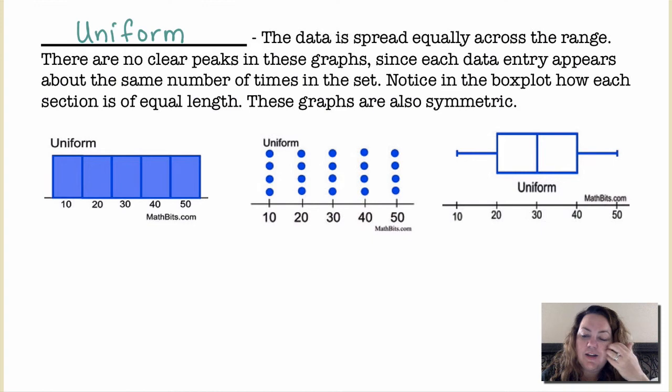Again, it's very hard to tell with the box plot because that box plot looks just about the same as like the symmetric box plot. So it's very hard to tell with the box plots when you're discussing shape, but you can tell that it is at least symmetric because it's kind of the same on both sides. You don't have any tail longer than the other.